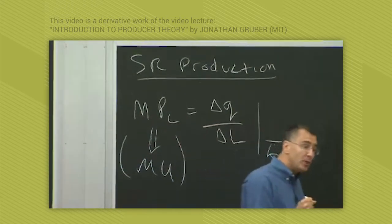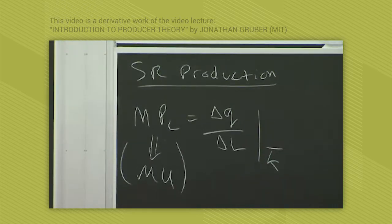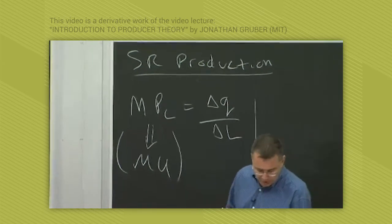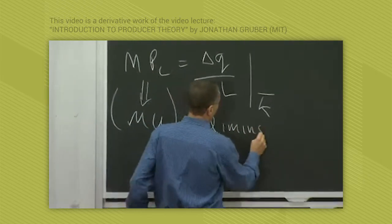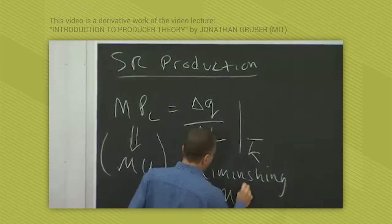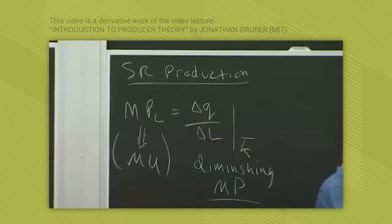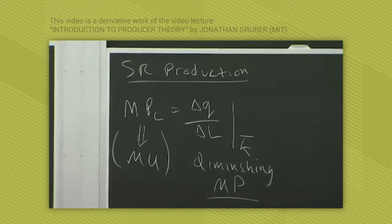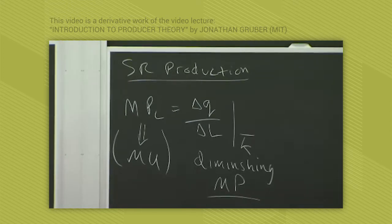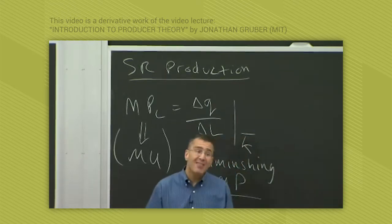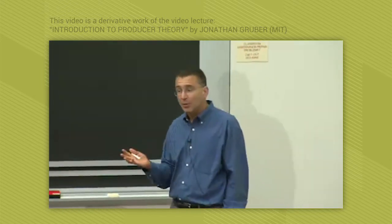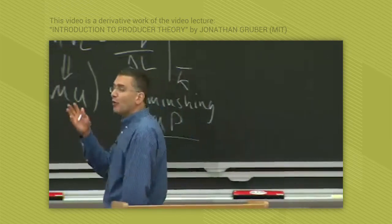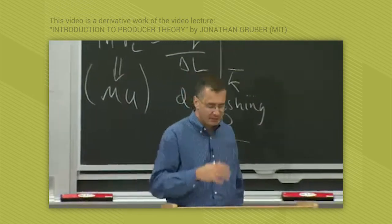And just as we assumed and discussed the intuition for diminishing marginal utility, we're going to typically assume diminishing marginal product. That is, from a given level of labor, the next worker you add increases your total product by less than the previous one. Just like we have a non-satiation rule in utility, we're not going to say the next worker doesn't help. Every worker helps, but every worker helps less and less, just like every pizza means less and less to you.